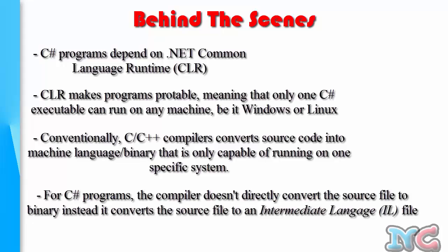So this C# source code with the .CS extension is converted by the compiler into an assembly language. Wherever you take that intermediate language, it will need to be recompiled into the target machine's own machine language — for Linux into Linux machine code, for Windows into Windows machine code — which greatly increases portability.